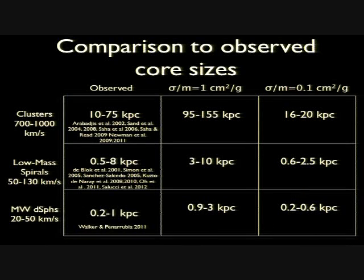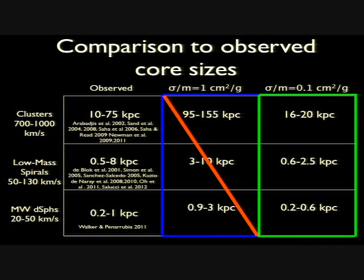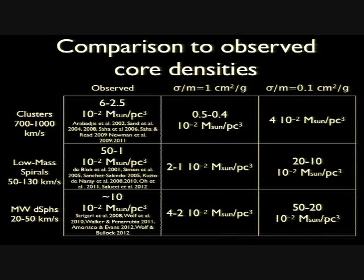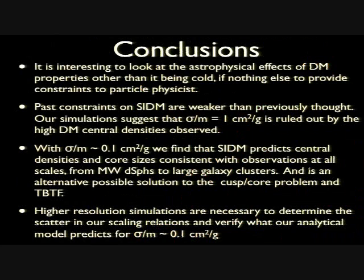Comparing to observations of core sizes in clusters, dwarf spirals, and Milky Way dwarfs: for sigma/M = 1 there is some tension but you cannot completely rule out the model. For sigma/M = 0.1, everything looks okay. Looking at central densities, there is more tension for sigma/M = 1 — we can essentially rule out that model based on central densities across all scales. For sigma/M = 0.1, everything is consistent. If the central densities of Milky Way dwarfs are compatible, this solves the too-big-to-fail problem.